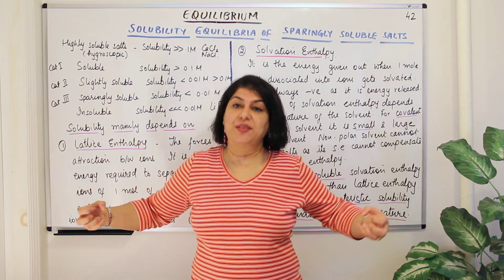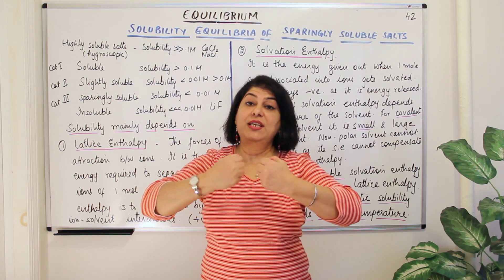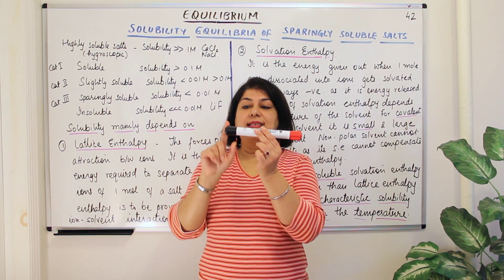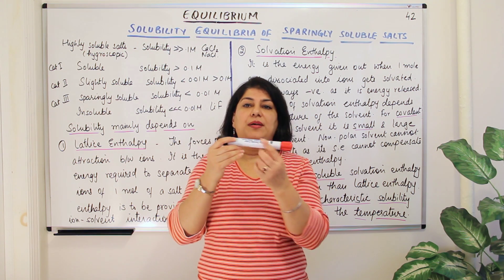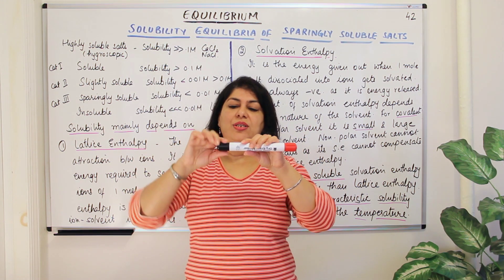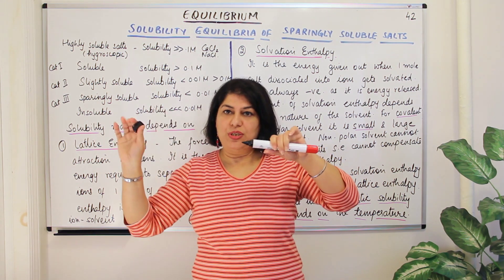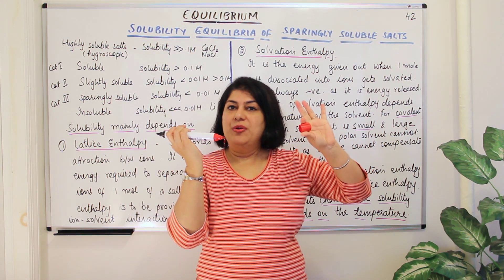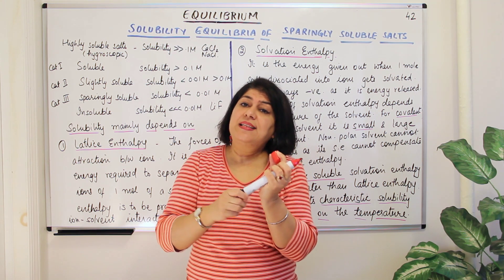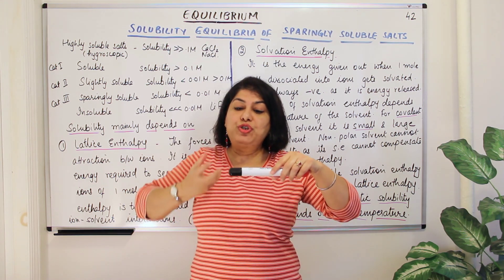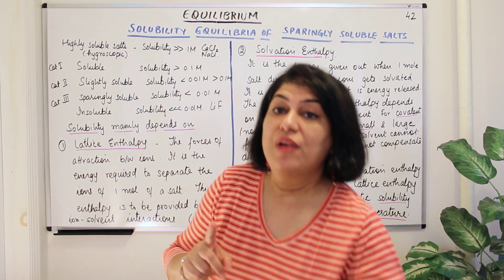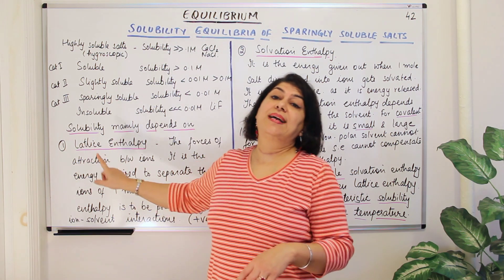If you have to separate these ions, you will have to use some energy. The energy required to separate the ions from one mole of a salt is known as its lattice enthalpy. The greater the lattice enthalpy, the more difficult it is to separate out the salt ions. Therefore, salts which have very high lattice enthalpy — it will not be easy to separate their ions, and that would affect solubility, because in order to dissolve the salt you first have to separate those ions.